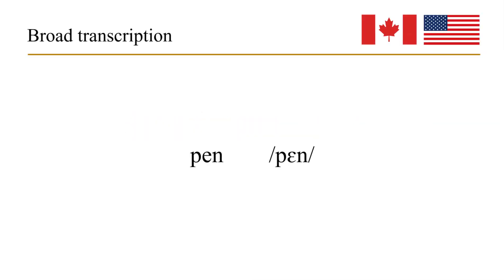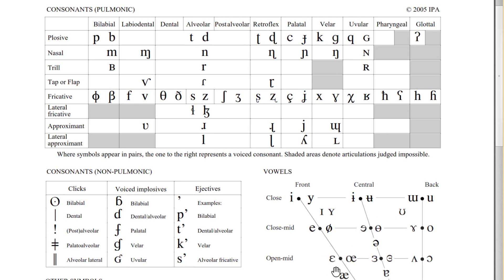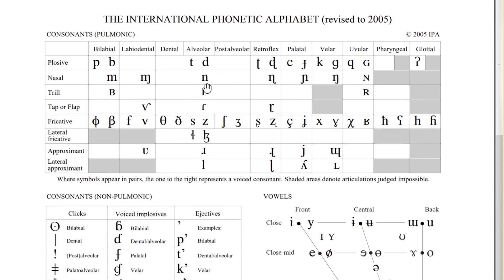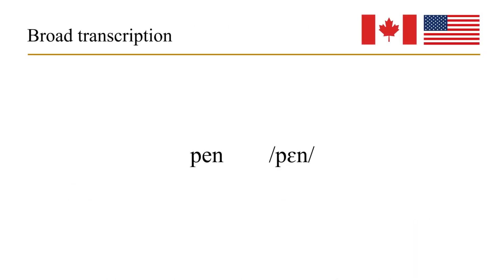The word 'pen' consists of three sounds, three phonemes. The first sound is /p/, the second is the open-mid front unrounded vowel /ɛ/, and the third is the voiced alveolar nasal /n/. So it's /p-ɛ-n/ — this is broad transcription.